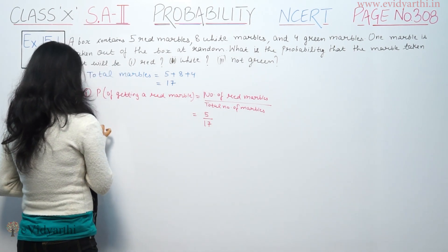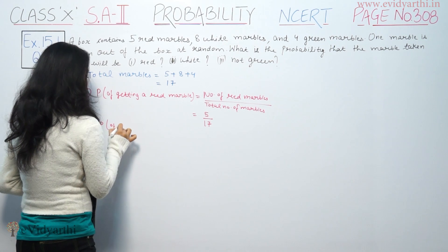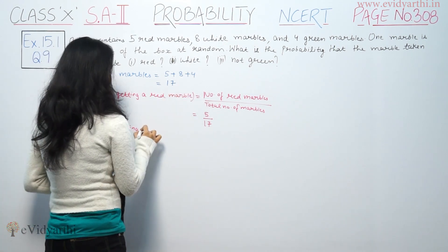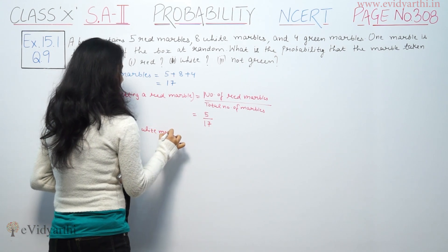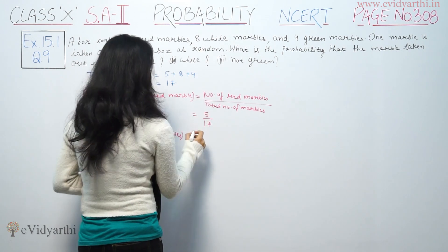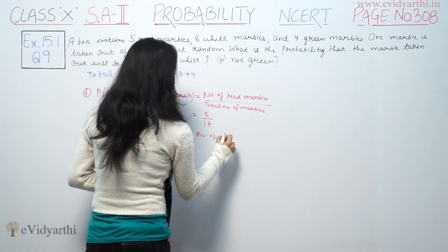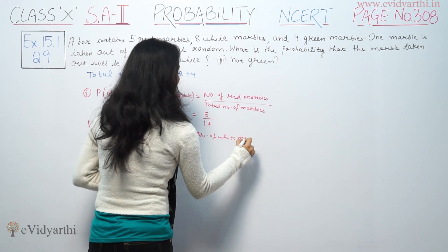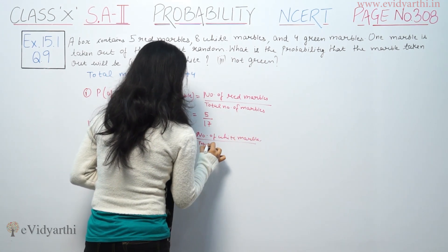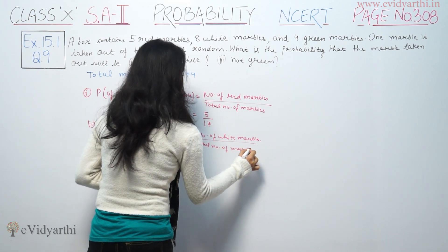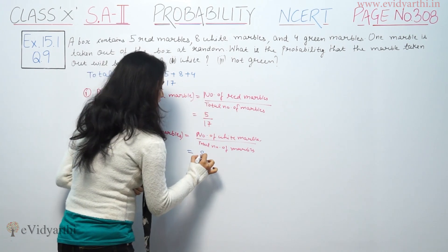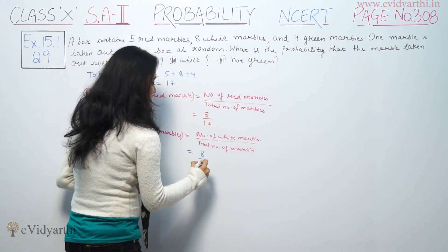Now, second part: probability of getting white marbles. White marbles in case we have 8. That would be number of white marbles upon total number of marbles. So here we have 8, total marbles is 17. So 8 by 17.